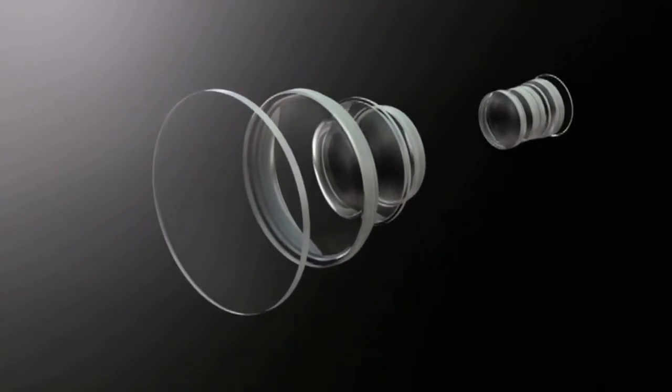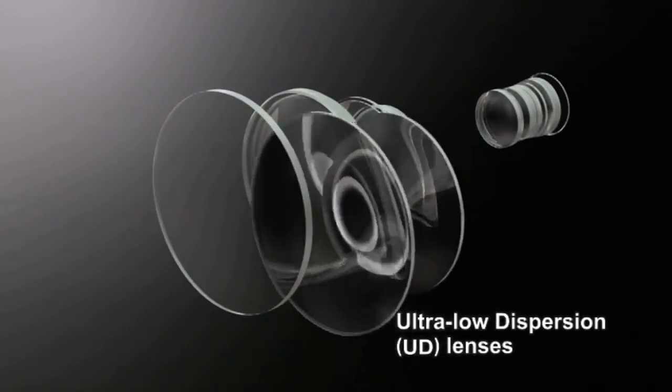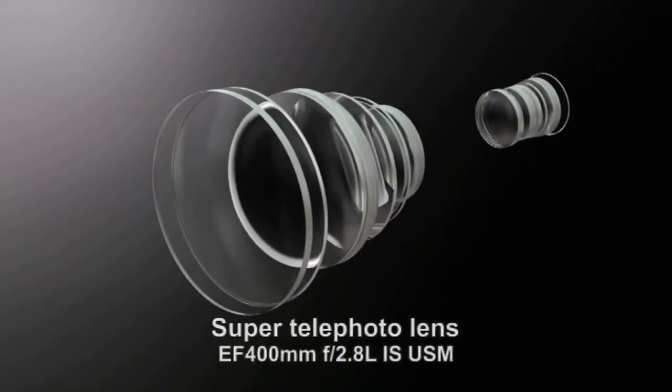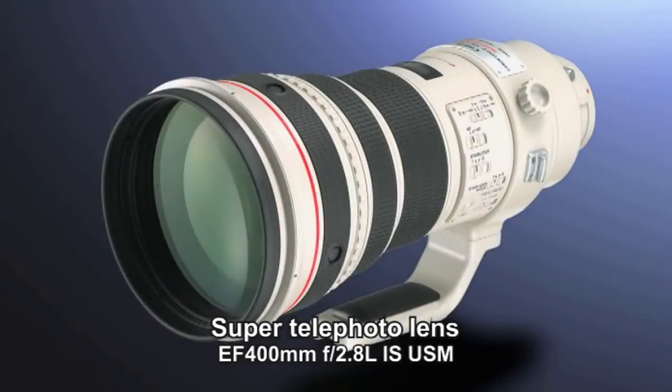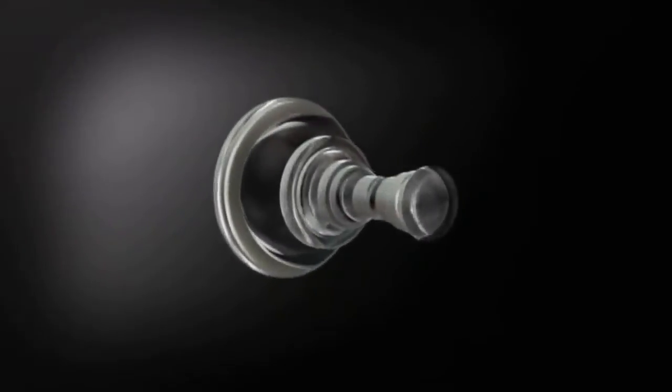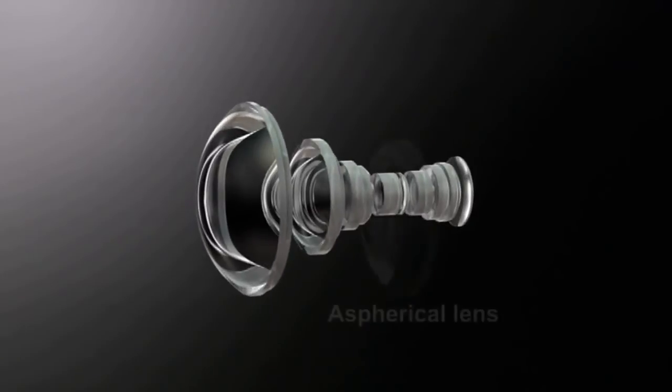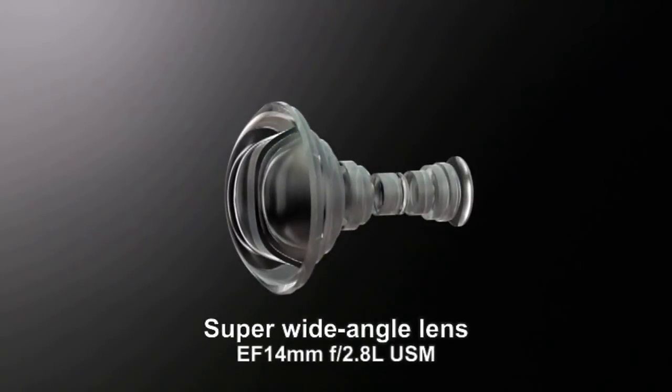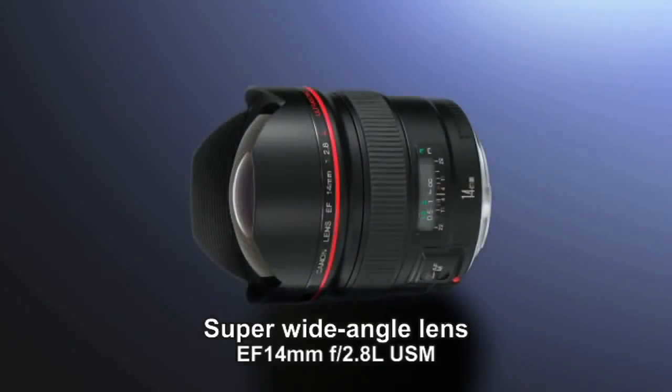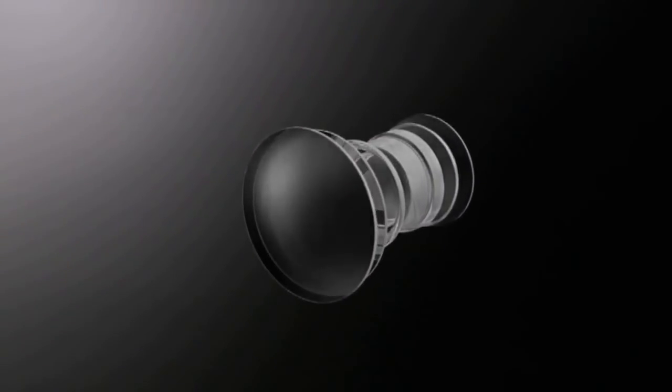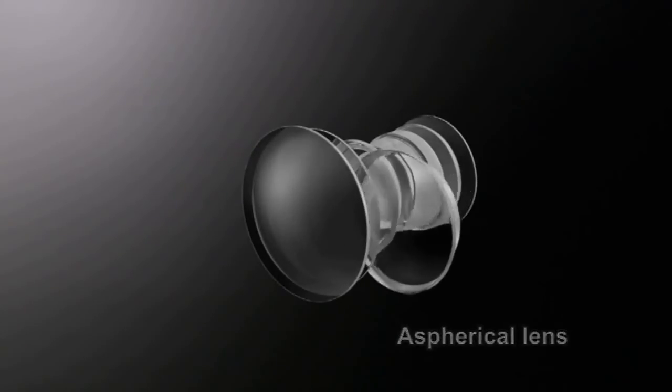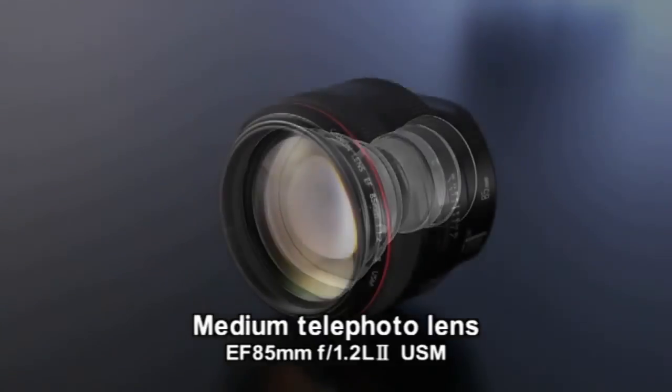The correction of chromatic aberration using UD and fluorite lenses has increased the image quality of super-telephoto lenses. The distortion correction achieved by aspherical lenses has made possible the development of super-wide-angle lenses. Medium telephoto lenses using large-aperture aspherical lenses have dramatically improved photographic performance.